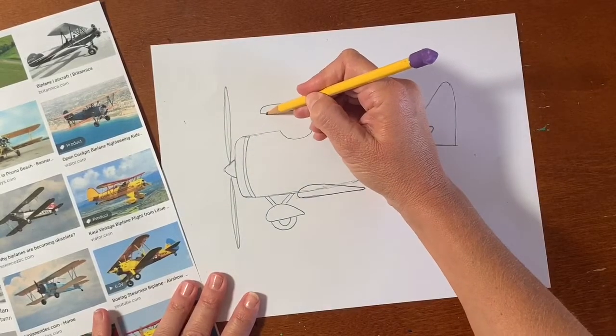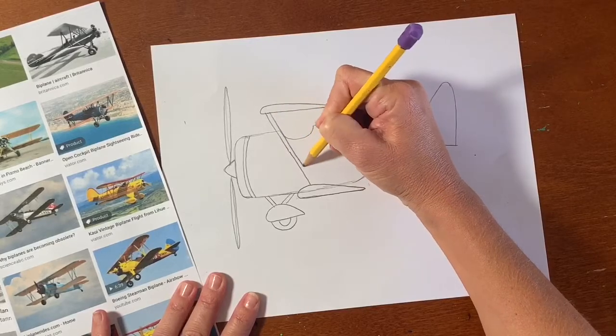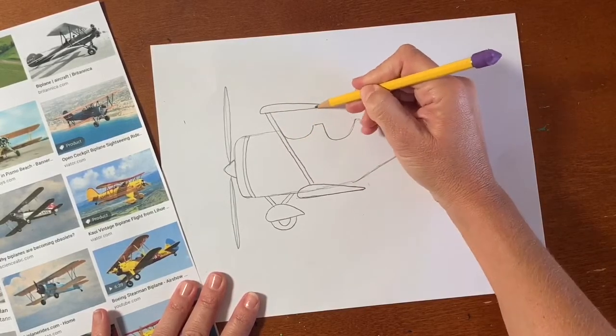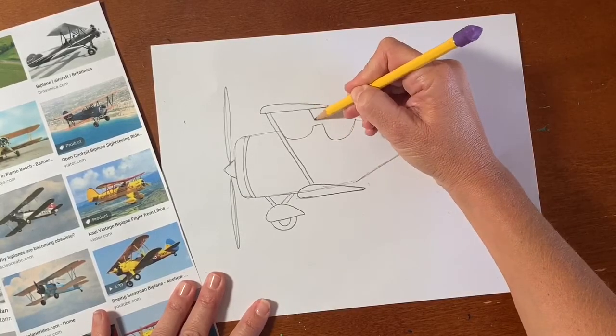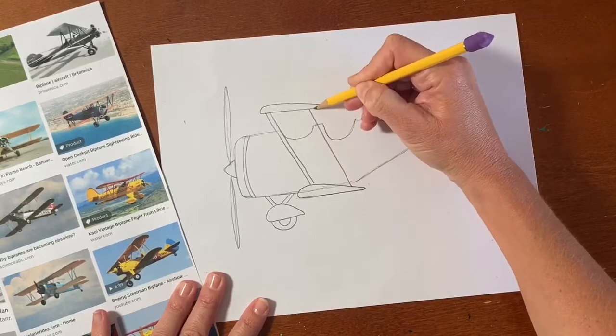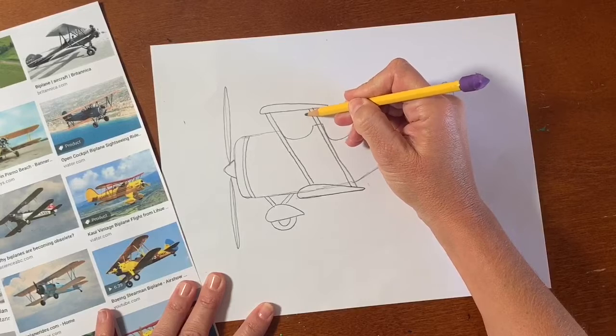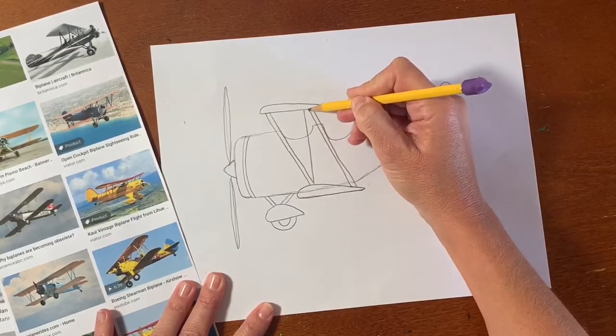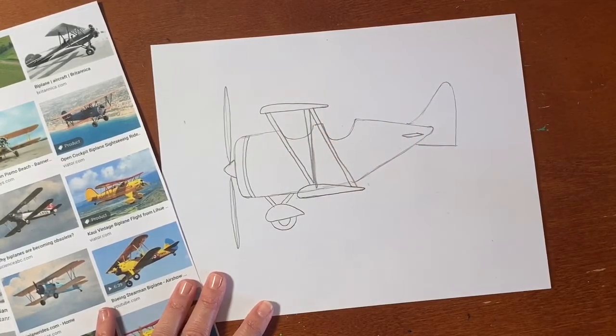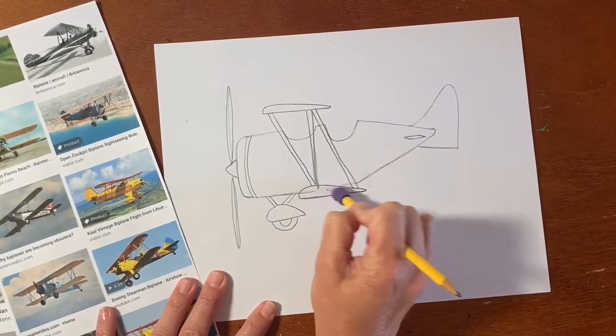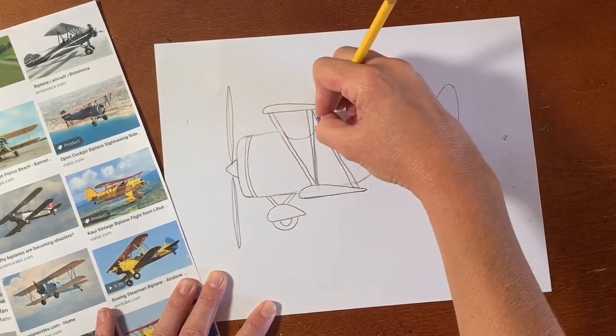And that thing needs to be attached to the other one. So we're going to use another diagonal line. This is like a pole or something to hold it together. And we'll do another diagonal line, same direction. And then a vertical line, straight up and down. Erase your overlapping lines. Looking good.